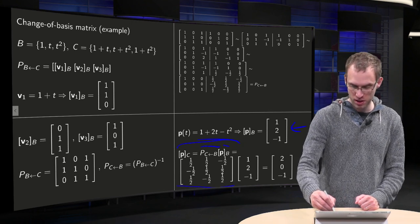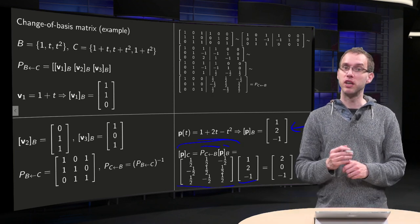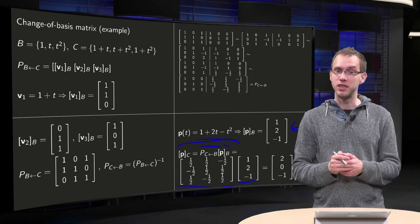So we have our matrix times our vector, and then we find p in the basis C: 2, 0, minus 1. And if you have your answer, you can easily check it, of course.